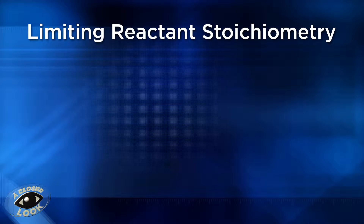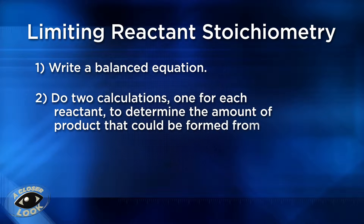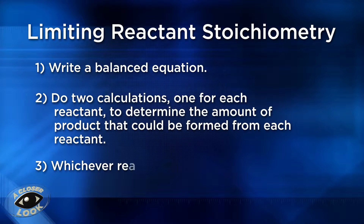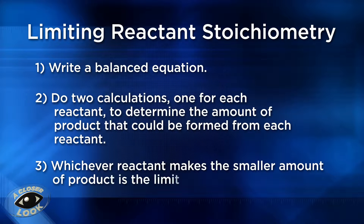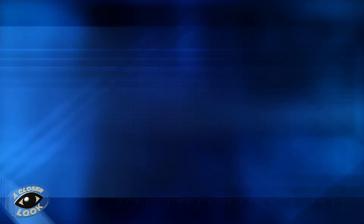There are a few steps involved in solving a limiting reactant problem. First, you must have a balanced equation. Then, you do two stoichiometric calculations, one for each reactant. Those two calculations will allow you to determine the amount of product that can be formed by each reactant. Whichever reactant makes the smaller amount of product is the limiting reactant. The amount of product that can be produced from the limiting reactant is known as the theoretical yield.